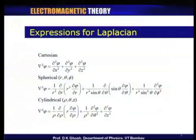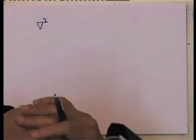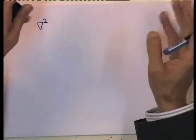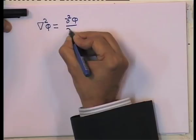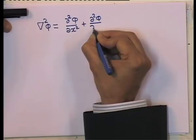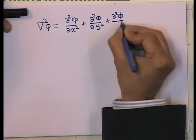Let us look at the formal aspects. Since we deal with the del squared operator, we would in general be interested in knowing what is the three-dimensional expansion of the Laplacian operator. In Cartesian coordinates this is very simple. If I want to write down del squared of phi — where phi is the potential — it is simply the partial derivative d squared phi by dx squared, plus d squared phi by dy squared, plus d squared phi by dz squared.